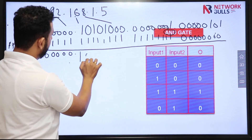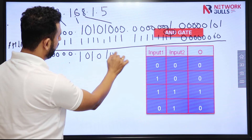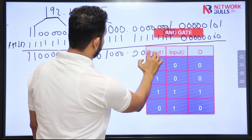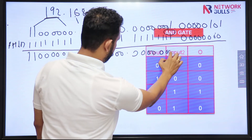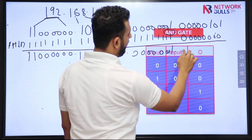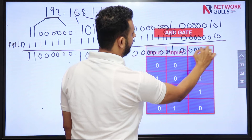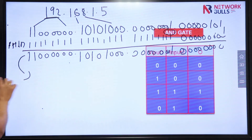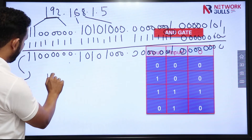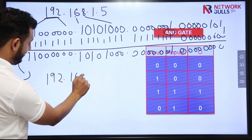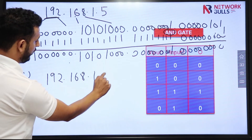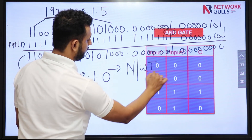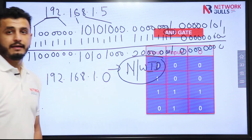We are very near to the network ID. For the last octet, the AND of 00000101 with 00000000 gives all 0s. Converting back to decimal, the value will be 192.168.1.0. So this is the network ID — it means this network will start from 192.168.1.0.